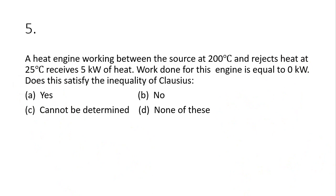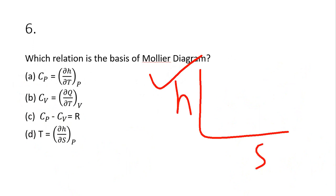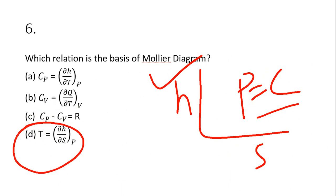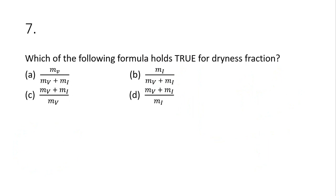Question 6 is about the Mollier diagram. The Mollier diagram is drawn with enthalpy on one axis and entropy on the other, where pressure is constant. Looking at the diagram, option D is the correct answer.